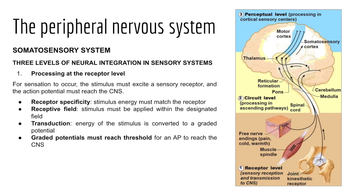Processing at the receptor level requires four things for sensation to occur. First, receptor specificity: the receptor must be specific to the given stimulus — inner ear receptors pick up sound, olfactory receptors pick up chemical odorants, and these are not interchangeable. Second, the stimulus must be applied within the receptive field — for example, touch receptors in the palm won't be stimulated if touch occurs on the forearm.